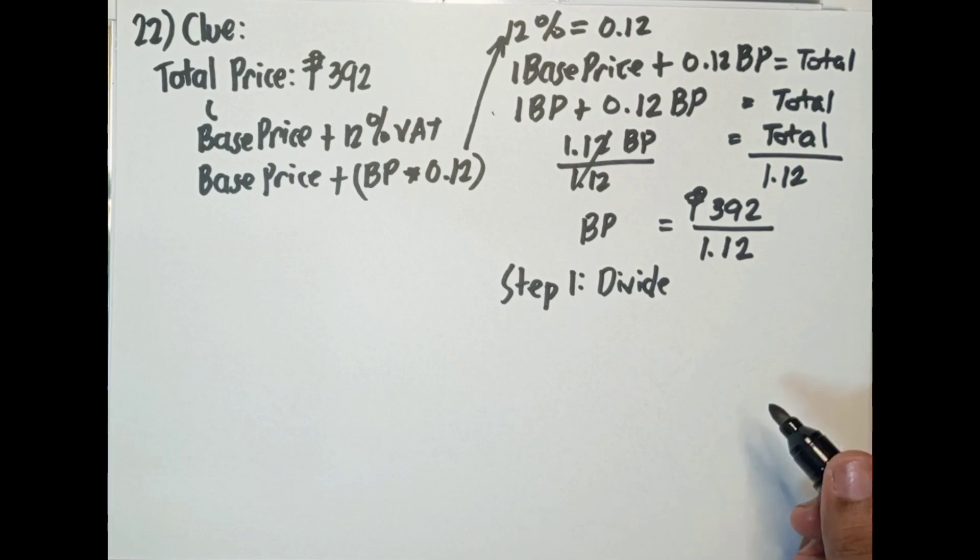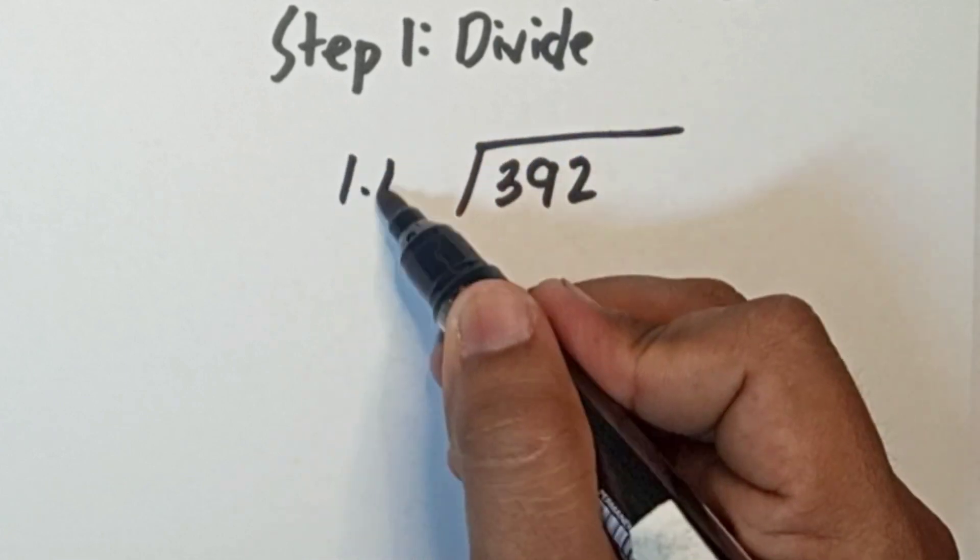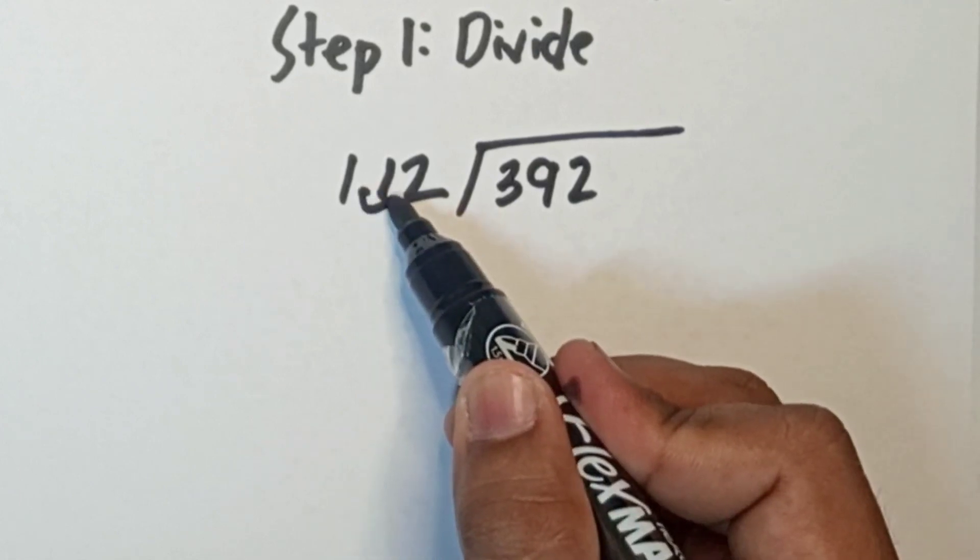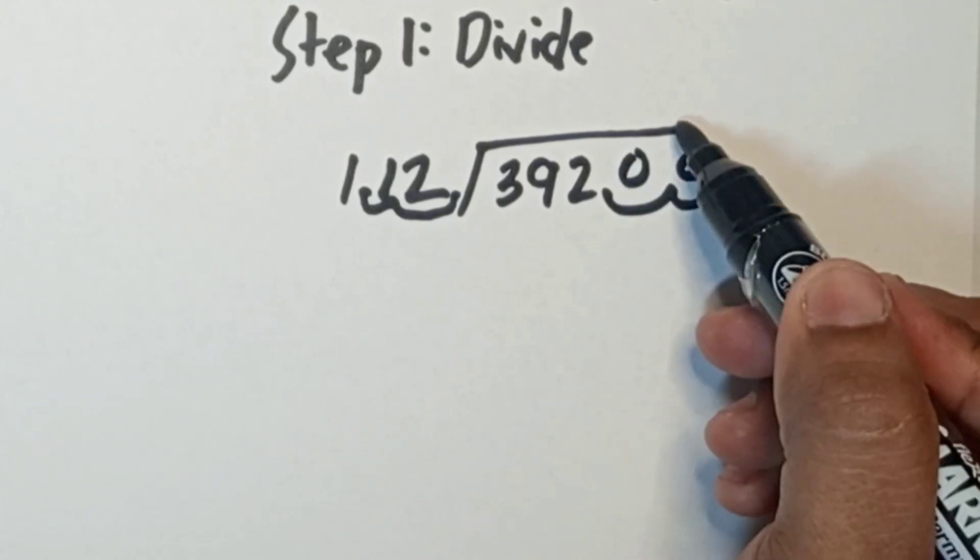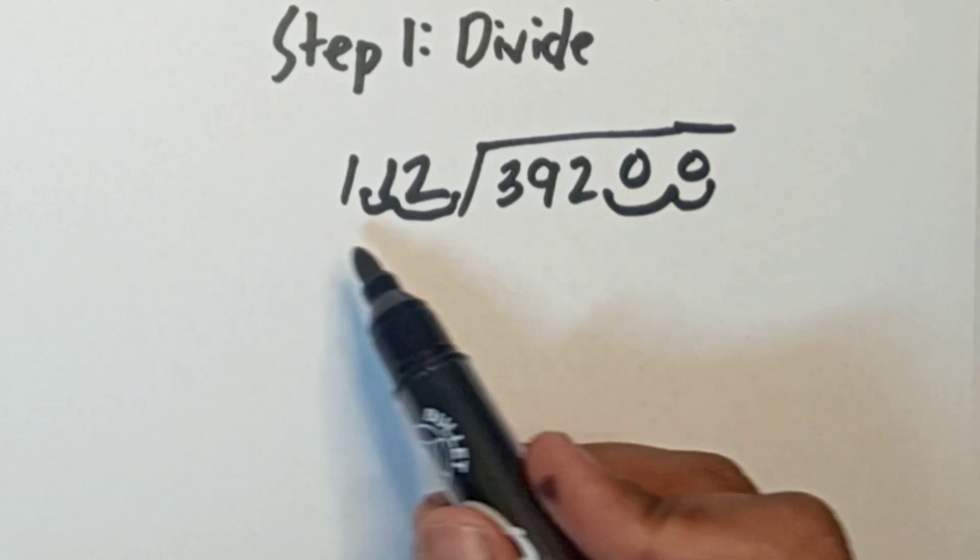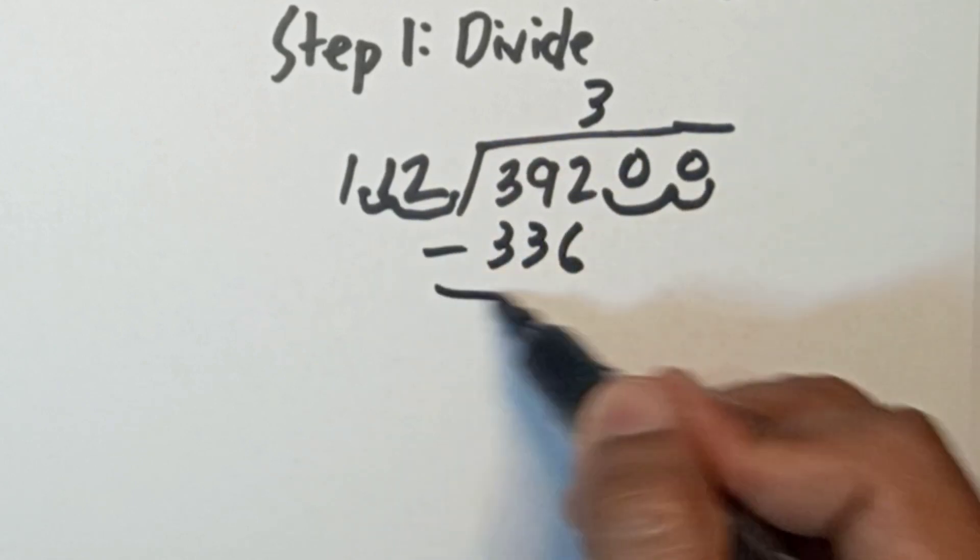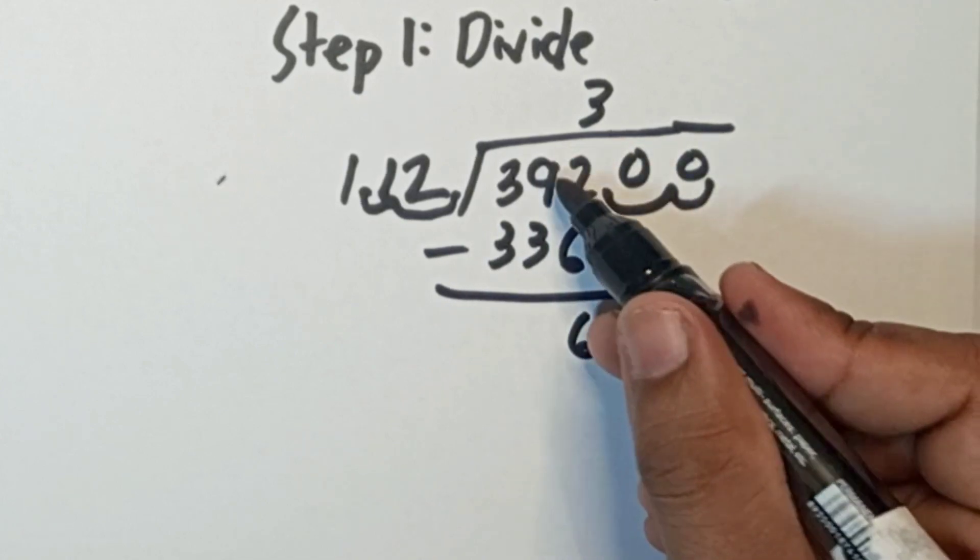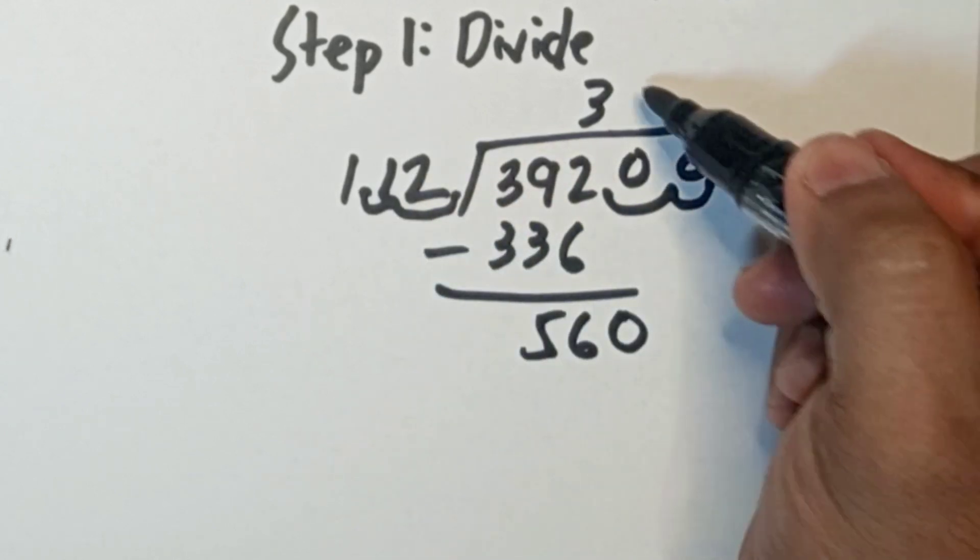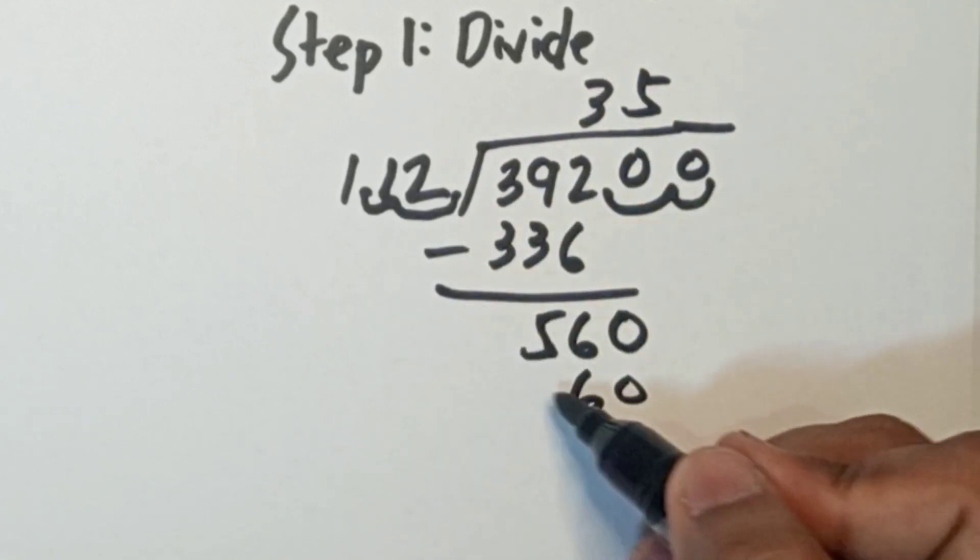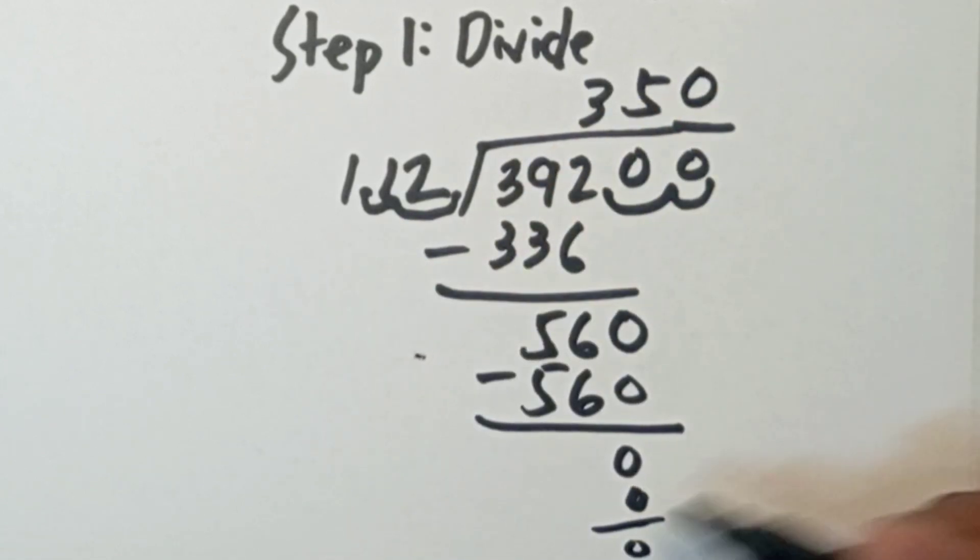Paano mag-divide ng may decimal? Ganito guys. First is, i-move natin ito 2 decimal places. Kung nag-add tayo dito, mag-add din tayo dito sa loob. Add 0. Pwede na tayo mag-divide ng whole number. 39200 divided by 112 is 3. 3 times 2, 6. 3 times 11, 33. Minus 12 minus 6 is 6. Ito nag-borrow tayo, maging 8. 8 minus 3, 5. 560 divided by 112 is 5. 5 times 12 is 60. 5 times 1 is 5. 0. So ito yung base price natin, 350 pesos.